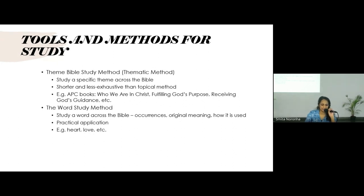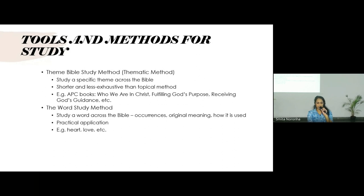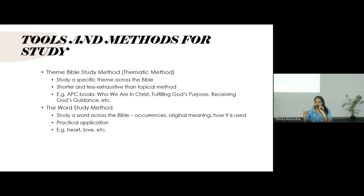Another approach is the word study method, where we take a specific word and look at it across scripture. For example, the word 'heart.' As I showed on BibleHub, if you click on the word it will show you every place in the Bible where that word is mentioned. If you choose something like 'heart' or 'love' you'll have thousands of references — it would be better to look at a word that is a little less common.